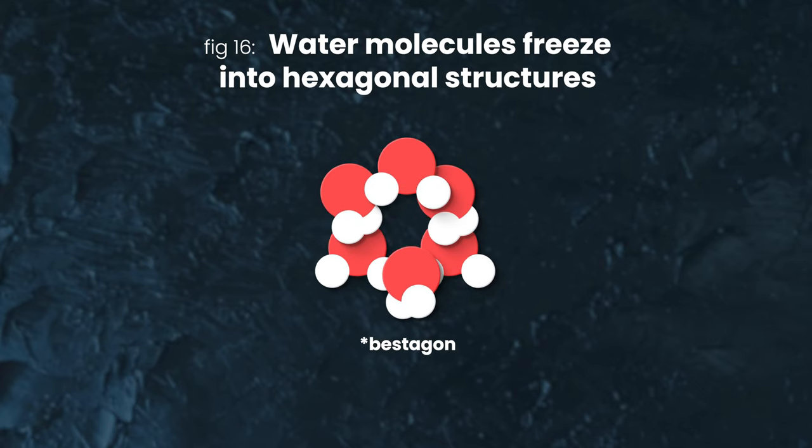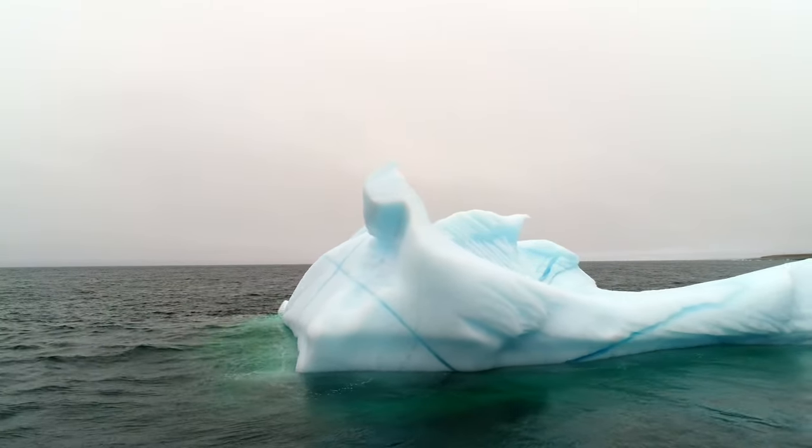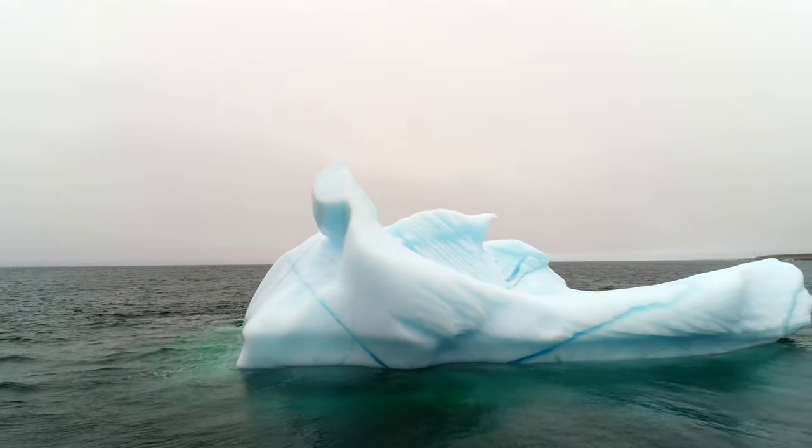Water crystallizes in little hexagons like this, with a lot of space in the center of each hexagon. This is why ice is less dense than water and icebergs float and all that.